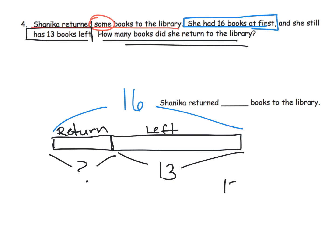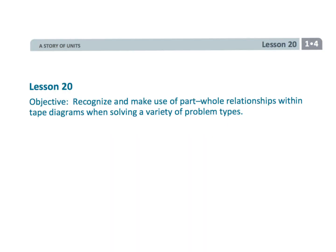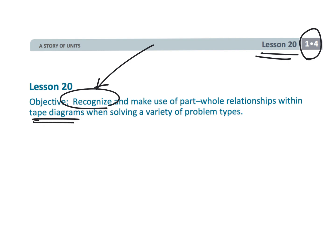That wraps up first grade module four lesson 20. Students are continuing to use tape diagrams and recognizing whether the tape diagram suggests subtraction or addition.